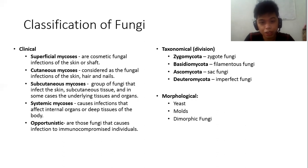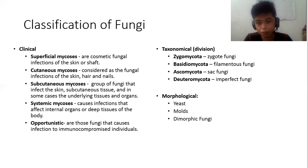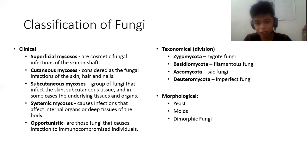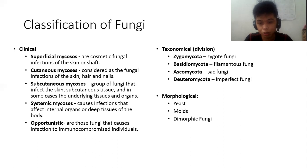The taxonomical classification divides fungi by structure: Zygomycota (zygote fungi), Basidiomycota (filamentous fungi), Ascomycota (sac fungi), and Deuteromycota (imperfect fungi, with unusual structure). The morphological classification divides fungi into three: yeast, molds, and dimorphic fungi.